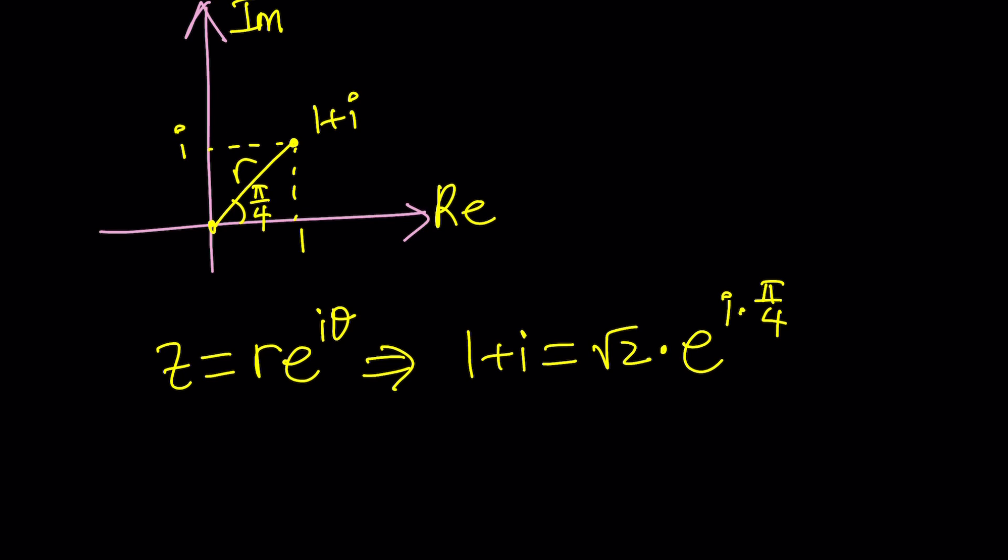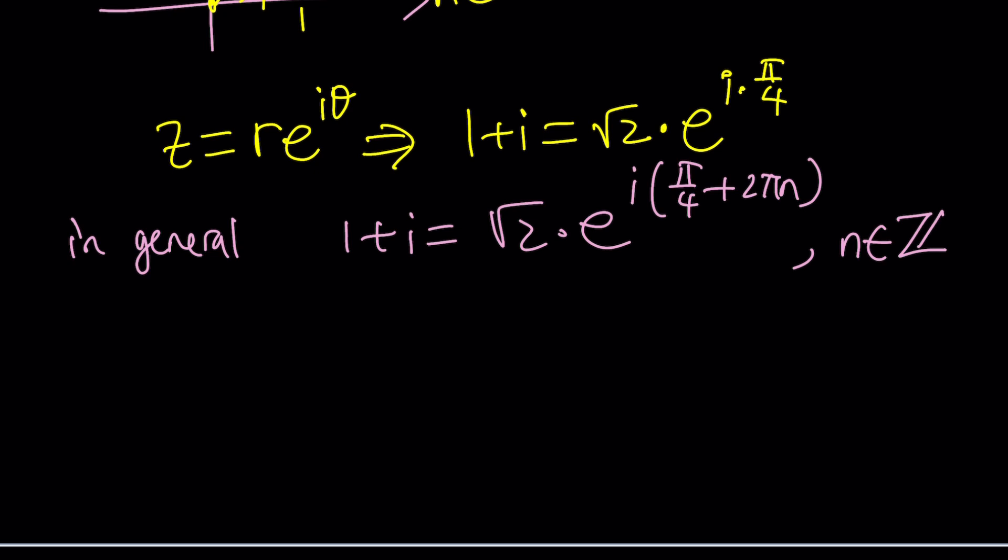In general, though, things are a little different. In general, we can write 1+i as √2 times e^(i(π/4 + 2πN)), where N is an integer. It can be positive or negative. We're allowed to add multiples of 2π. That's the period. Because if you make a full rotation, you're going to be at the same point. So, in other words, we have infinitely many values for this.